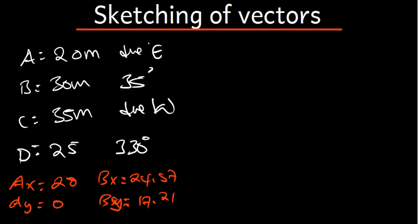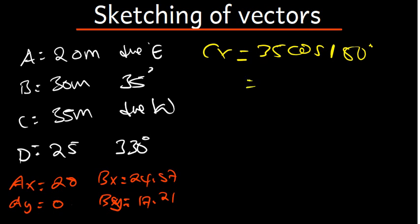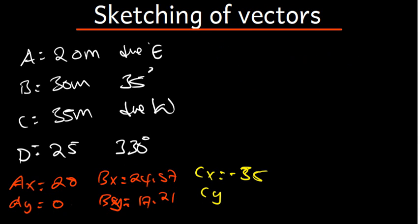Vector C is due west, so the angle is 180 degrees. C_x = 35·cos(180) = negative 35. C_y = 35·sin(180) = 0.